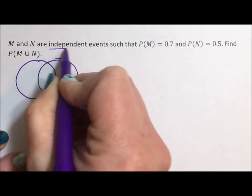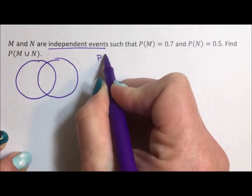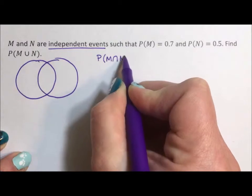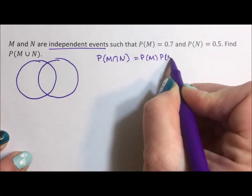So knowing that they're independent events means that the probability of the intersection is equal to the probability of M times the probability of N.